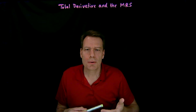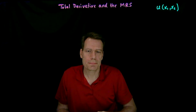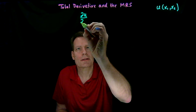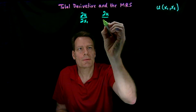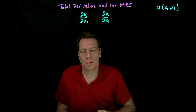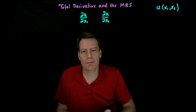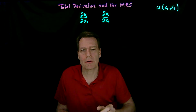We've now shown that if we have a function over multiple variables, like a utility function with two goods, then we can talk about multiple partial derivatives. In this case we could talk about the partial derivative of u with respect to x1 and the partial derivative of u with respect to x2. And if this was a function over more goods — three goods, for example — we'd also have a partial derivative of u with respect to x3, or x4 and so on.